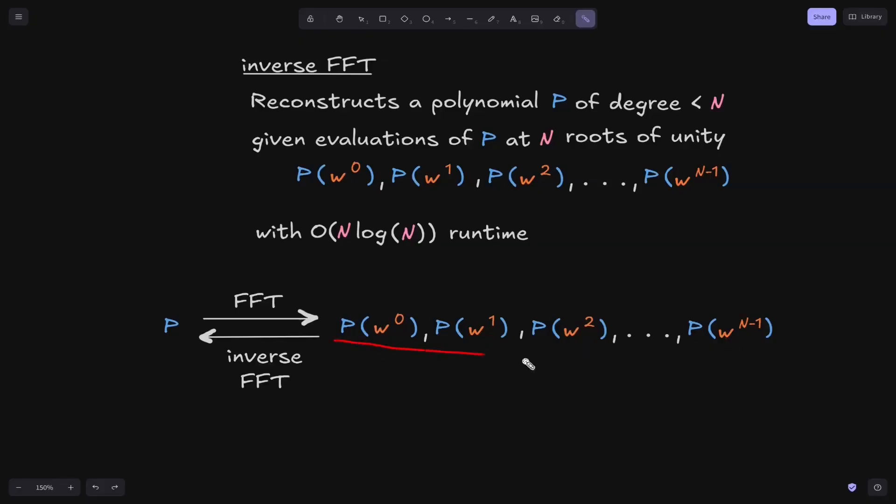And the inverse FFT, given these evaluation points, we may not know what the original polynomial is, whereas simply given these evaluation points, we can reconstruct the polynomial. We can find out what the polynomial is. So that's the big picture of what FFT does and what the inverse FFT does.